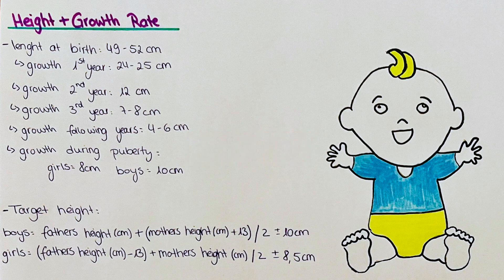So at birth the baby is around half a meter, so we have to remember 50 centimeters. Half of that is 25 centimeters, which is the normal growth during the first year after birth. Then half of 25 is 12.5, which is the amount of centimeters normal during the second year after birth.